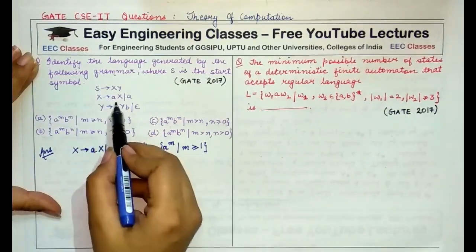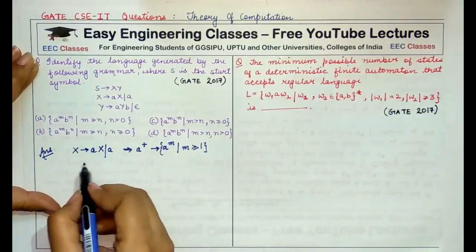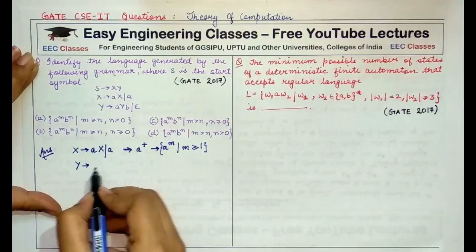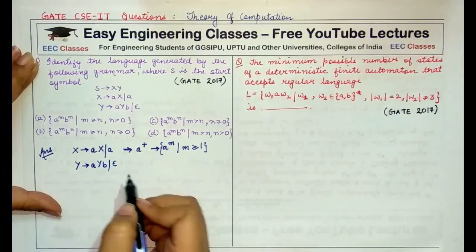Else, if it is replaced by AX, then it will be greater than 1. Now, coming to Y, Y denotes A, Y, B or epsilon.